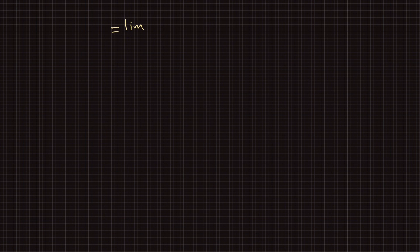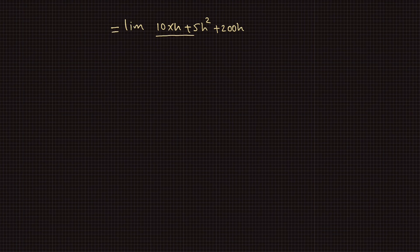c prime of x equals the limit of 10xh plus 5h squared plus 200h divided by h as h goes to 0.